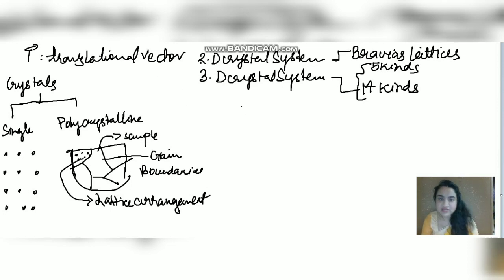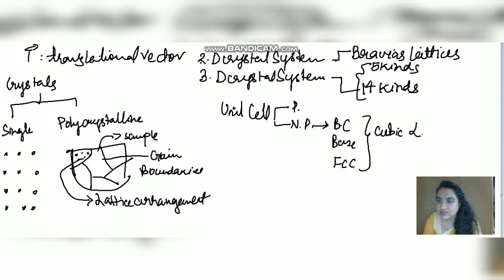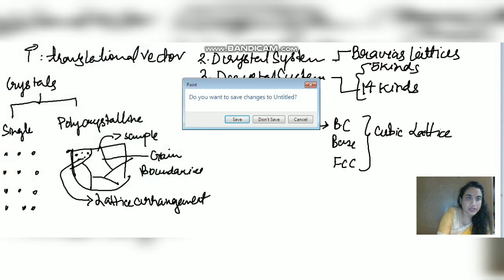Coming back to unit cells: they are of two types — primitive and non-primitive. Non-primitive contains body-centered, base-centered, and face-centered — all cubic lattices. In two-dimensional Bravais lattices, we have basically four types, but the rectangular one is distinguished into simple and centered, giving us five kinds total. The first is the square lattice.